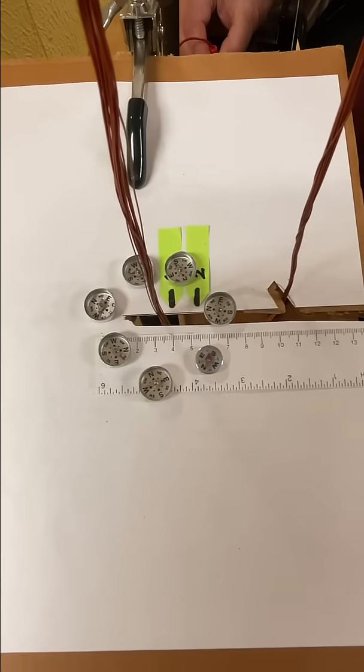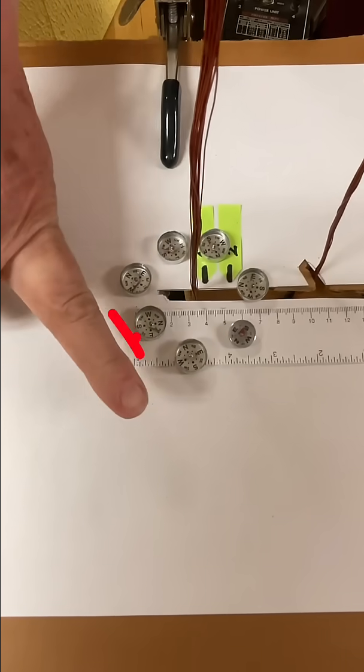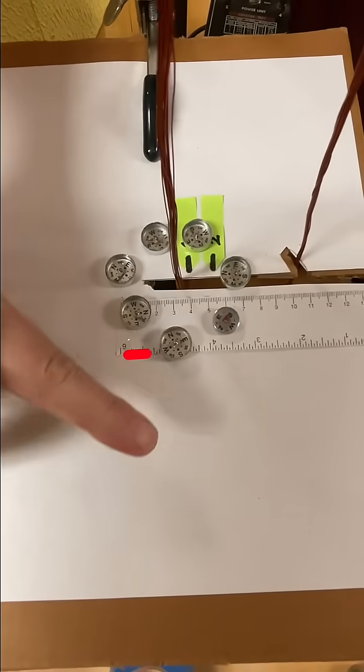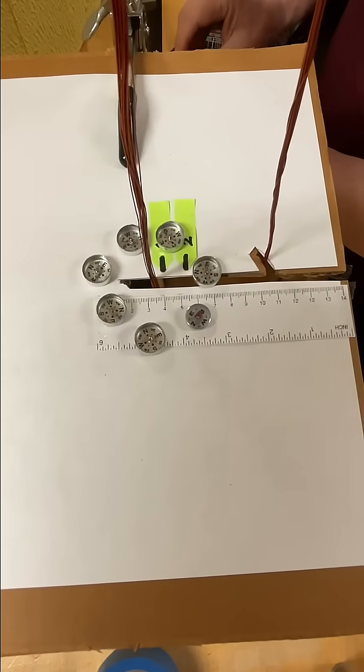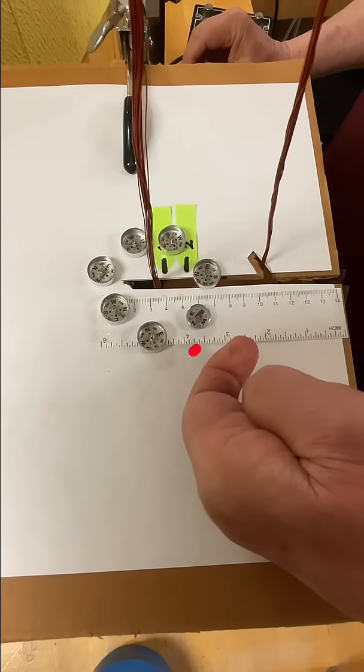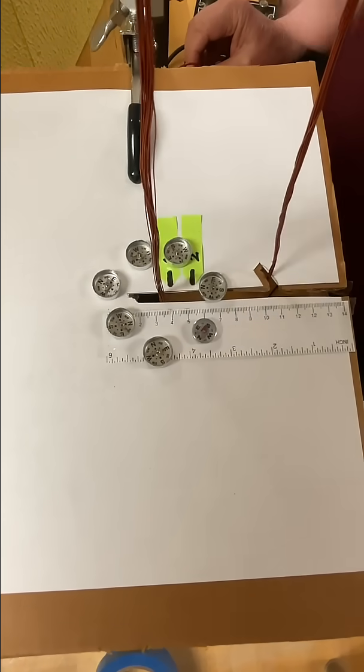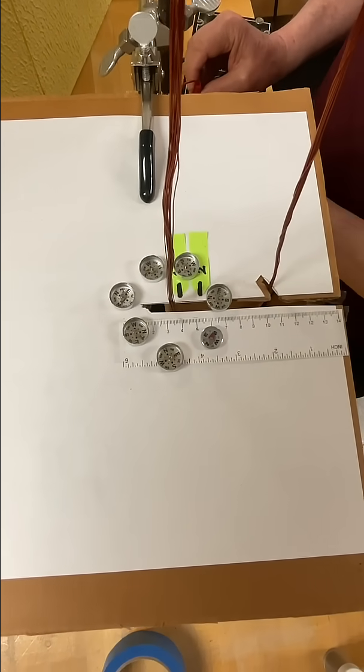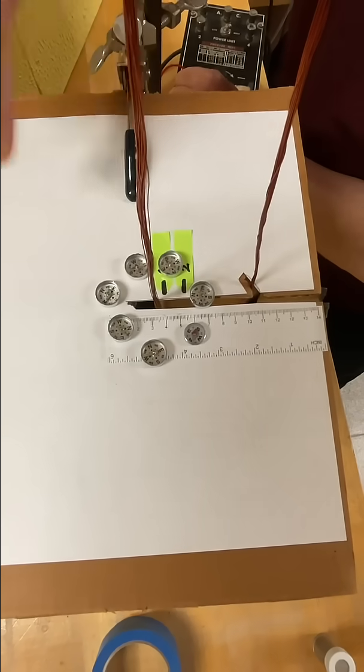And if you notice, look what direction they're pointing. This is pointing that way, this compass is pointing that way, this compass is pointing that way. Here's one pointing this way, then this way, then this way. They're pointing around in a circle, they're all agreeing that the field goes the same direction around, which is counterclockwise as seen from above.